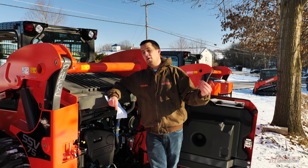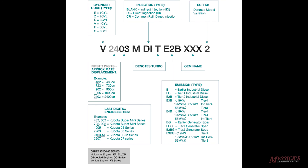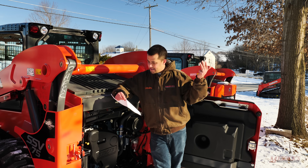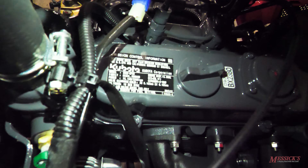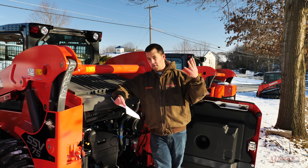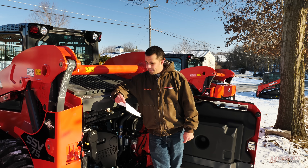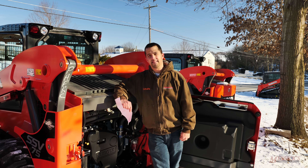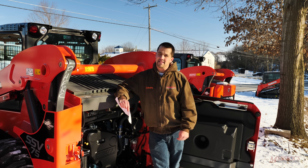The very first thing in the model is a letter, and that letter denotes the number of cylinders that engine has. E is used for 1 cylinder, Z for 2, D — which is very popular, like the D902 used in all the BX tractors — is 3 cylinders. V is the 4-cylinder engine used in most of the bigger tractors. F is for 5 cylinders and S for 6 cylinders, though some of those I don't think necessarily exist today.